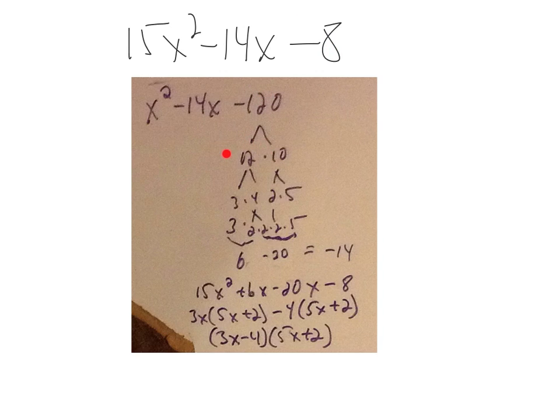And then I factored the negative 120 down. I had to go all the way down to these prime factors. And then I looked at it for a little bit longer, and I noticed, if I multiply this 2 times 3, I'm going to get 6. And if I put 2 times 2 times 5, I get 20.